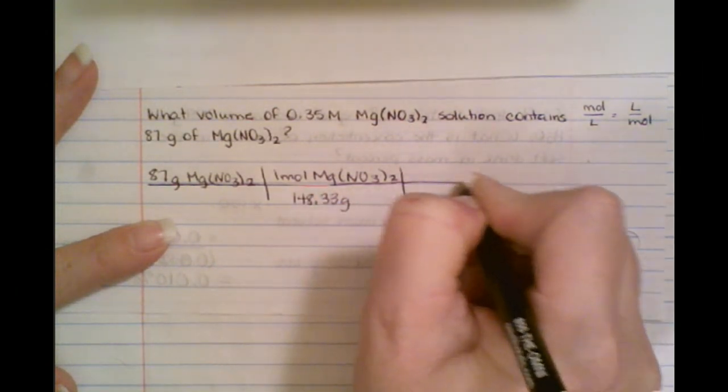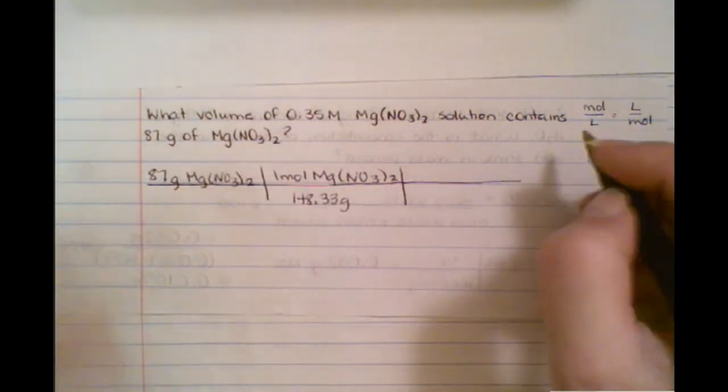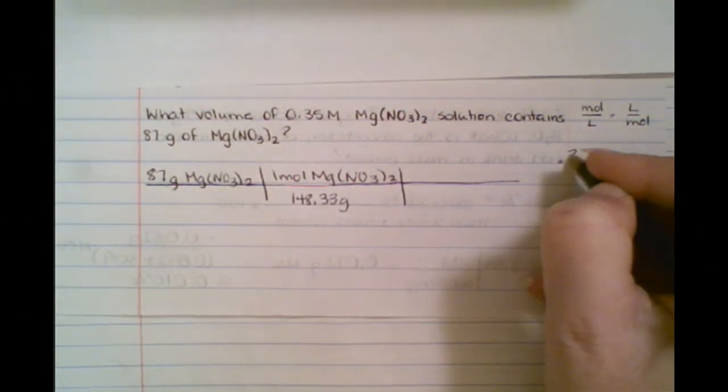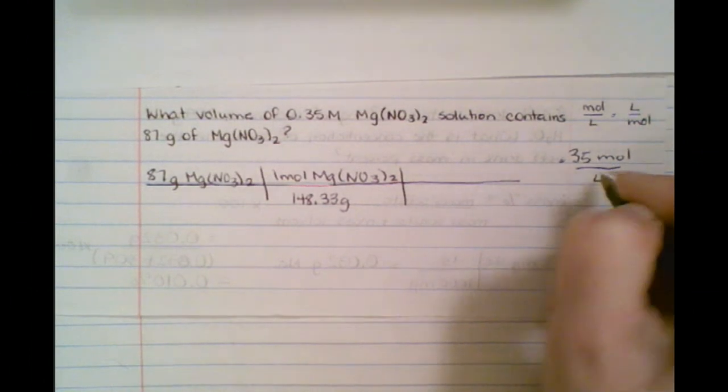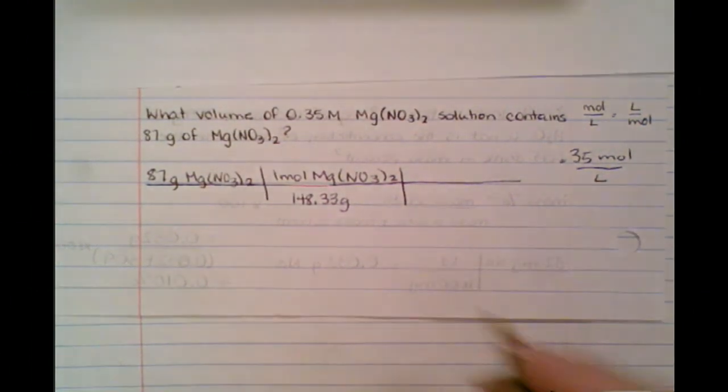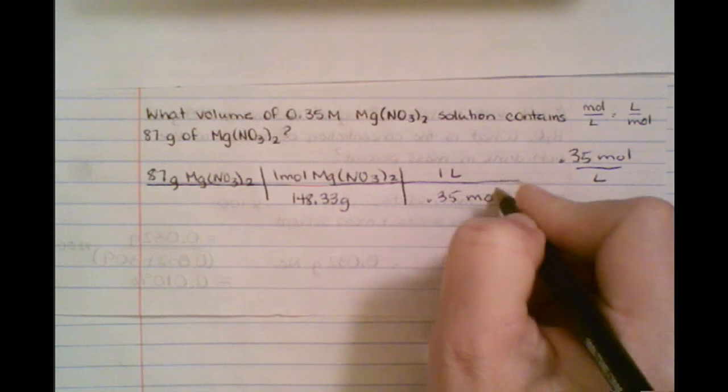Now, I don't want moles. Remember, it says I need a volume. So when I first write this, it's going to look like 0.35 moles per liter. But we want to end up with liters. So that liter is going to have to come up here on top, and I'm going to have to put the moles on the bottom.